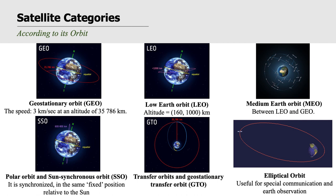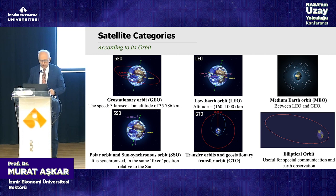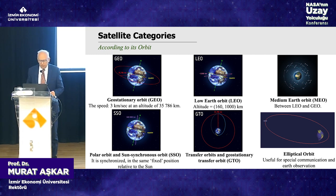There are two different types of orbits. One is the orbit around the equator. It is filled with several countries' satellites and is an important orbit — the so-called geostationary orbit.